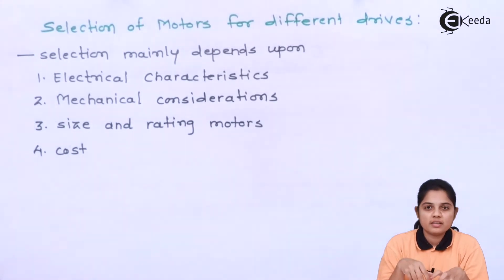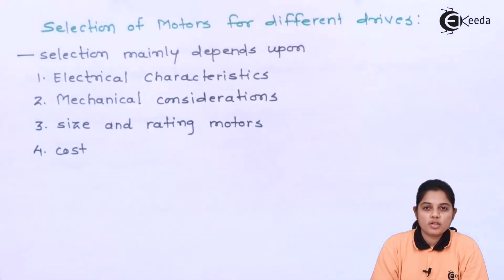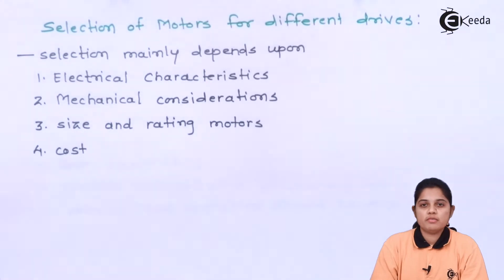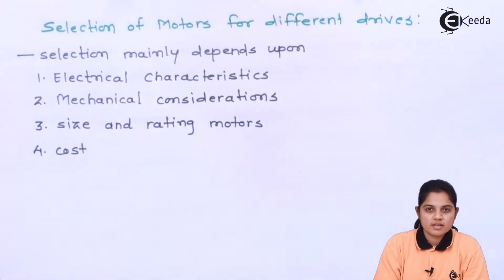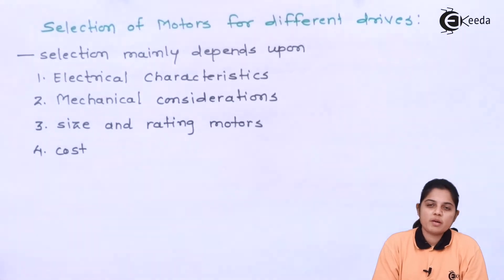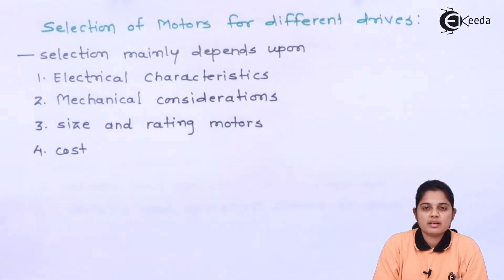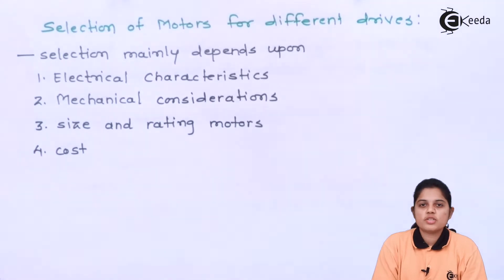What is the power factor of that particular motor? What is the efficiency? How to control the speed — whether you need another device to control it, or by varying certain parameters of the same power supply, whether you can control the speed or not. These are the parameters which come under the electrical consideration.